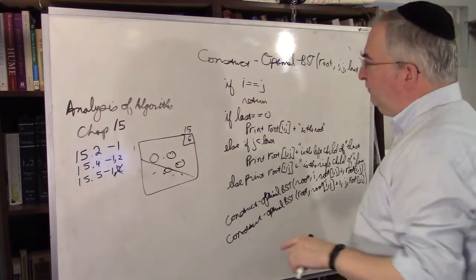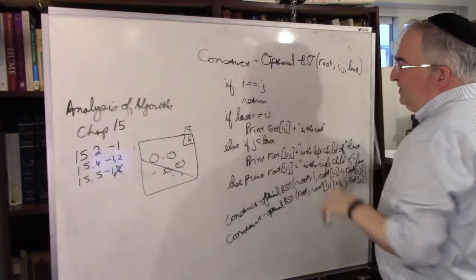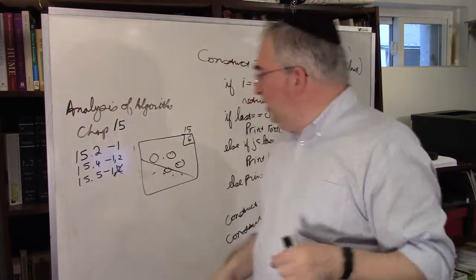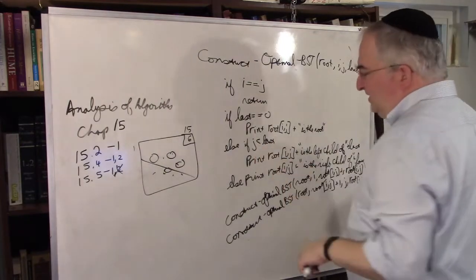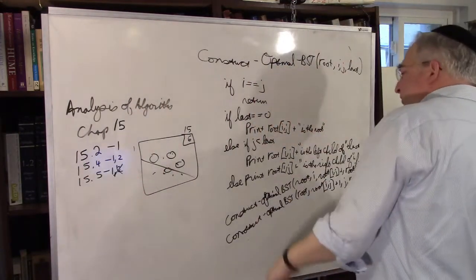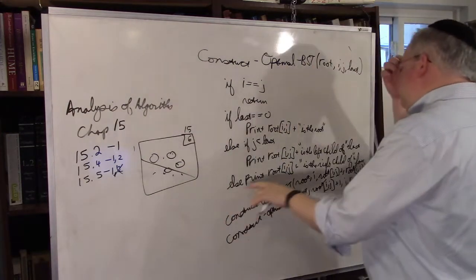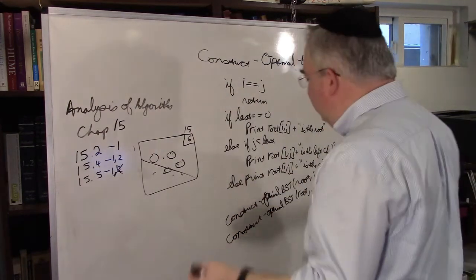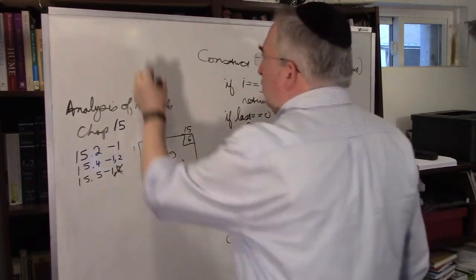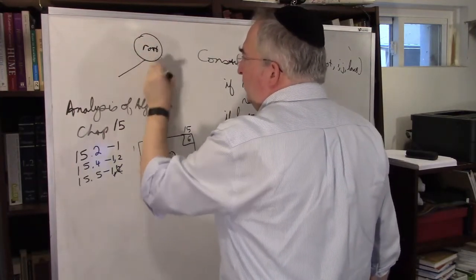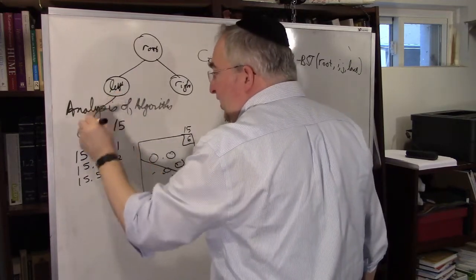The algorithm Construct_Optimal_BST is recursive. Given the root matrix, i, j (start and end positions), and last (the last element). If i == j, there's nothing in between — just return. If last == 0, you're at the root, so print: root[i,j] is the root. Then if j < last, print root[i,j] is the left child of last; else print root[i,j] is the right child. Then recursively call this algorithm for the left and right subtrees.